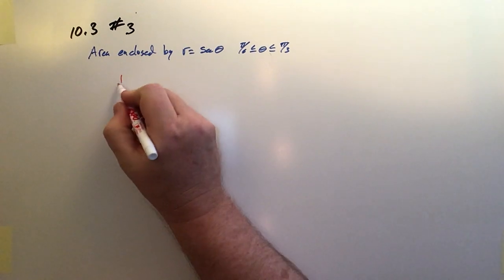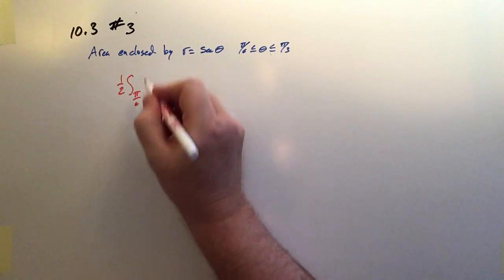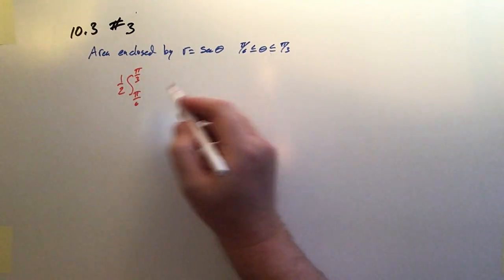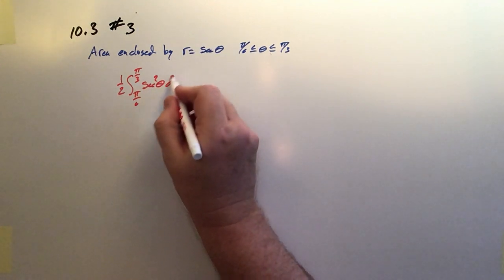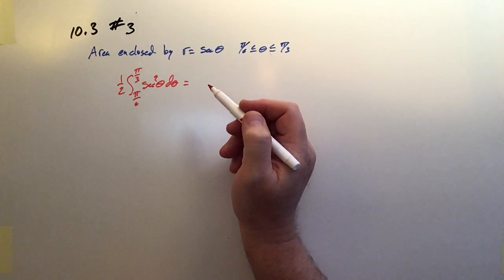So recall that it's one half of the integral between the limits pi over 6 to pi over 3 of the square of the radius. So this is secant squared theta d theta. Of course, the integral of secant squared is tangent.